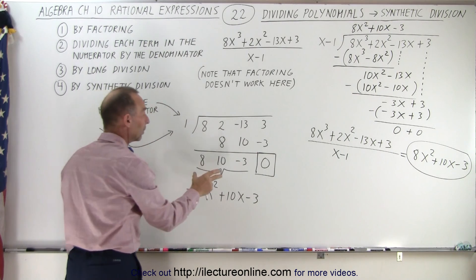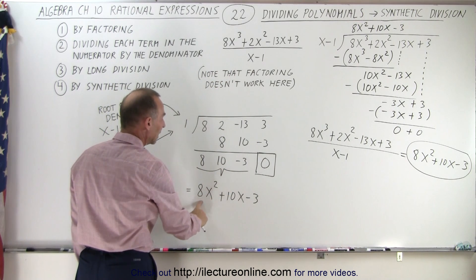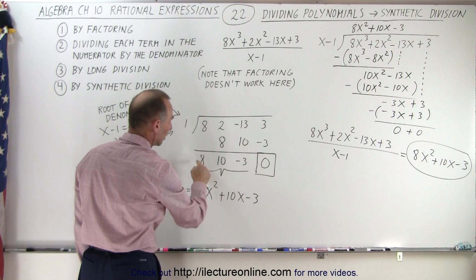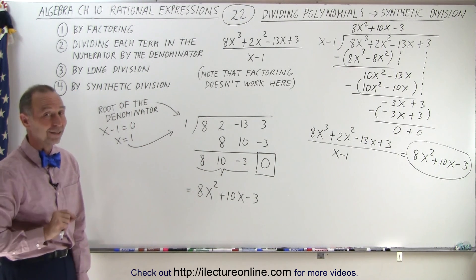If there's no remainder, we know that the denominator exactly fits in the numerator, and then the quotient is 8x squared plus 10x minus 3, which is obtained from using these three numbers right here. And that is how that's done.